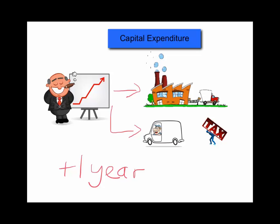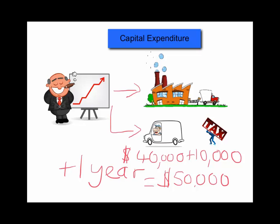Capital expenditure is always shown in the firm's balance sheet. For example, if the company imports a delivery van from Germany for forty thousand dollars but then has to pay an import tax — or tariff — of ten thousand dollars, then the actual cost of bringing the asset into the company will be fifty thousand dollars. So the capital expenditure is the original cost of forty thousand plus the import tax of ten thousand, totalling fifty thousand dollars.